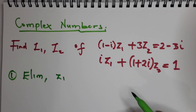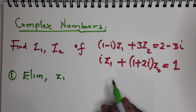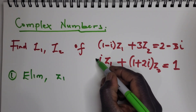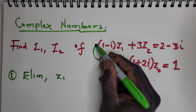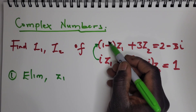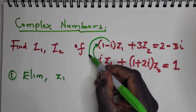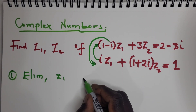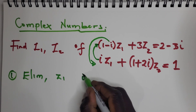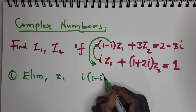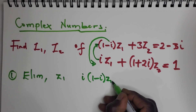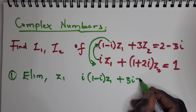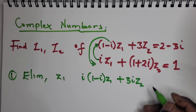So to get rid of that i, I'm going to multiply the bottom coefficient with the top one and then the top coefficient with the bottom one — cross-multiplying the coefficients like so.